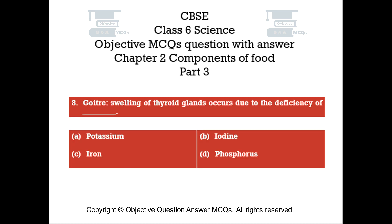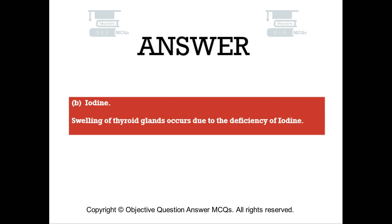Question number 8: Goitre, swelling of thyroid glands, occurs due to the deficiency of. Option A: Potassium. Option B: Iodine. Option C: Iron. Option D: Phosphorus. The right answer is Option B — Iodine. Swelling of thyroid glands occurs due to the deficiency of iodine.